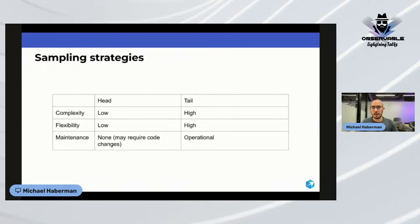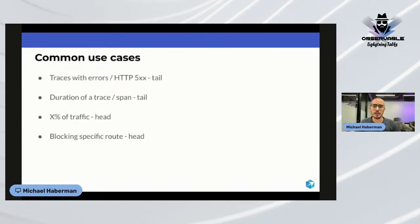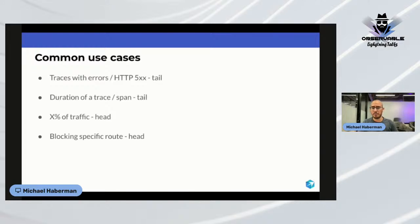You don't have to choose — you can combine head and tail sampling. Common use cases Michael has seen: traces with errors or HTTP 500s require tail sampling, as does filtering by trace or span duration. For simple percentage-based traffic sampling, head sampling is easiest. For blocking specific routes like HTTP health checks, head sampling works well. Summary: use the right tool for your specific need.